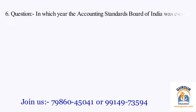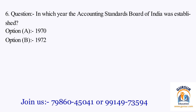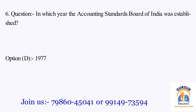Question number 6. In which year was the Accounting Standards Board of India established? The option A is 1970. The option B is 1972. The option C is 1973. The option D is 1977. The right answer of the question is Option D, that is 1977.